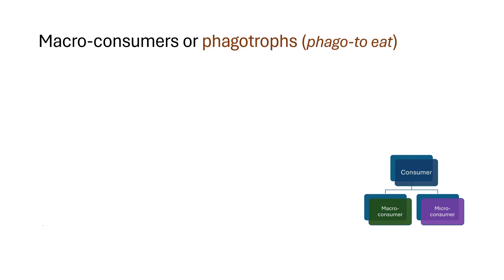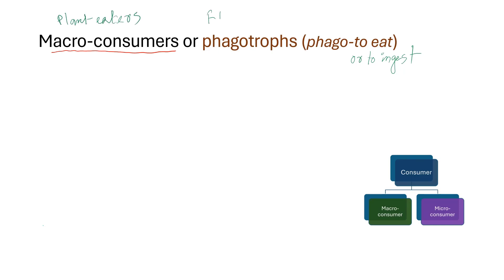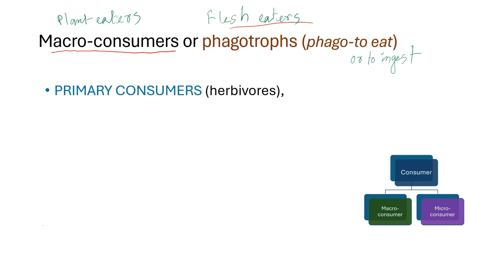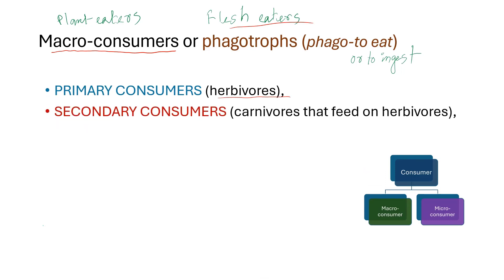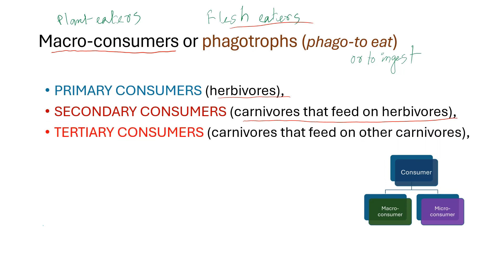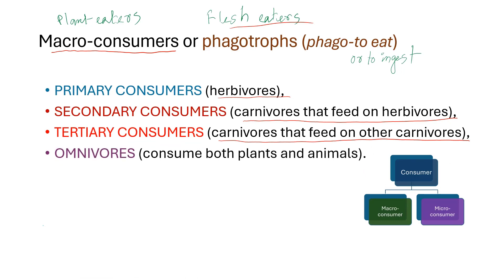Macro-consumers are also known as phagotrophs — 'phago' meaning to eat. They eat or ingest other organisms. If they are plant eaters, they are called herbivores; flesh eaters are called carnivores. Consumers are further classified into primary consumers or herbivores, secondary consumers (carnivores that feed on herbivores), tertiary consumers (carnivores that feed on secondary carnivores), and omnivores that consume both plants and animals.